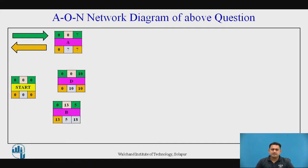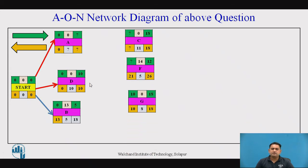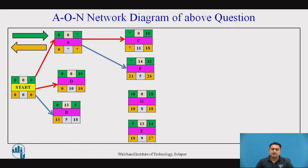Next, activities C, E, F, and G depend on the starting activities A, B, and D. This is the overall relationship between the starting node with zero duration and activities A, D, and B. C and F are dependent on A, G is dependent on D, and E is dependent on B, with relationships shown by arrow connectivity.